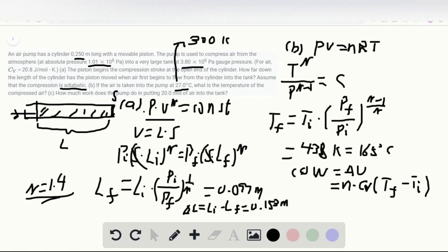So Tf is 165 Celsius degrees and Ti is 27 degrees. N is 20 moles, and the CV is given to be 20.8. So plug in the numbers, and the final solution is 57,408 joules.